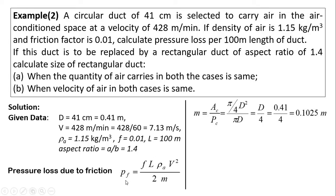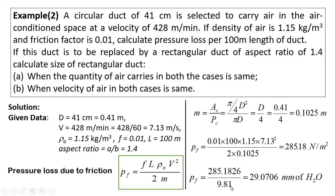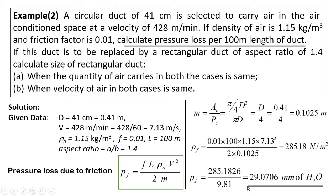Now all values are known. By putting all parameters into the formula, pressure loss due to friction Pf = 285.18 N/m². Converting to mm of water column by dividing by 9.81, we get Pf = 29.07 mm of water column. So in this way we can calculate pressure loss due to friction for a given circular duct.